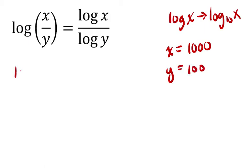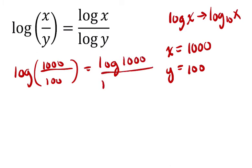Now we can evaluate this. The log of 1,000 over 100, that should be equal to, if this is true, the log of 1,000 divided by the log of 100. Well, this right here is the log of 10, and 10 to what power is 10? That's 1.